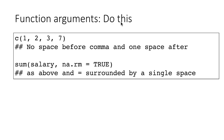For function arguments: arguments are separated by commas. Please don't put any space before the comma, and put exactly one space after the comma. So: one, comma, space, two, comma, space, three, comma, space, and no space before the closing parenthesis. For example, sum(salary, na.rm = TRUE) — no space before the opening parenthesis, no space after it, no space before the comma but one space after, and the equals is surrounded by spaces as per the first convention.